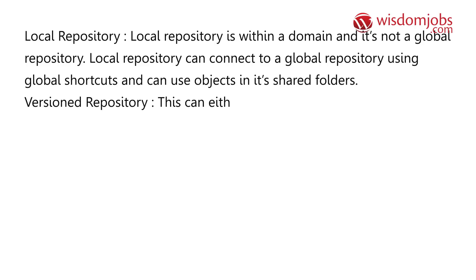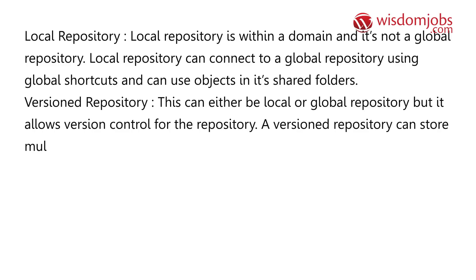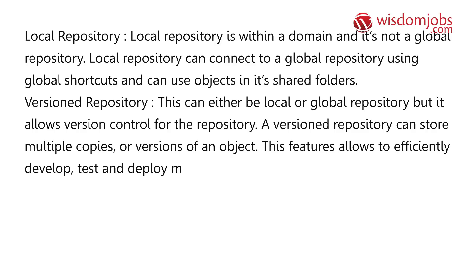A local repository can connect to a global repository using global shortcuts and can use objects in its shared folders. Version repository: this can be either a local or global repository, but it allows version control. A version repository can store multiple copies or versions of an object, and this feature allows you to efficiently develop, test, and deploy metadata in the production environment.